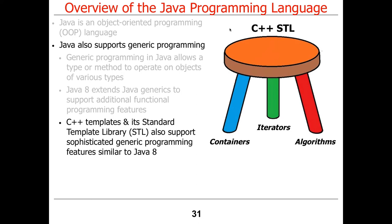C++ has many of the same capabilities with respect to generic programming and functional programming — C++ has something called the Standard Template Library. The main difference is that C++ goes further than Java in having generic functions called algorithms that work on user-defined types and built-in types without any changes in the code. With Java, the generic programming stuff works differently for built-in types than for user-defined types. But both have very similar patterns and idioms, so once you know one, it's easy to learn the other.